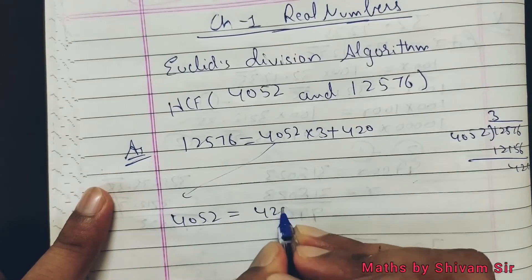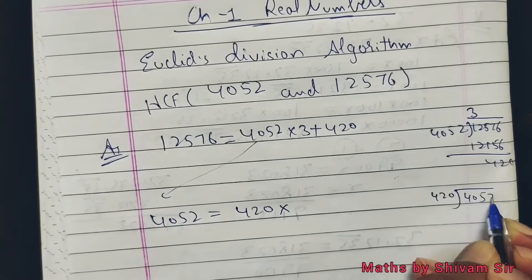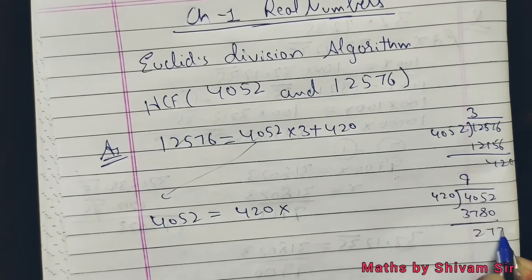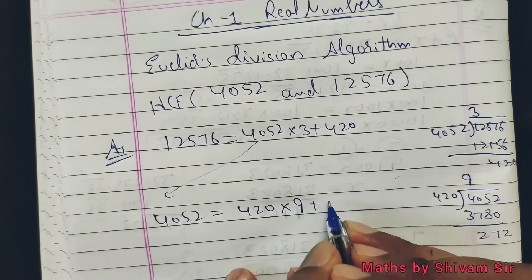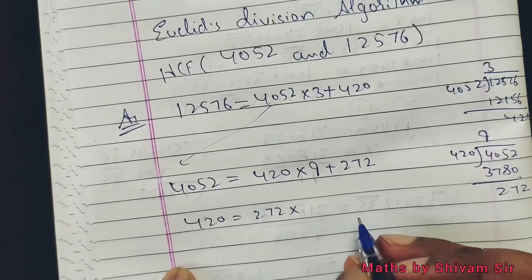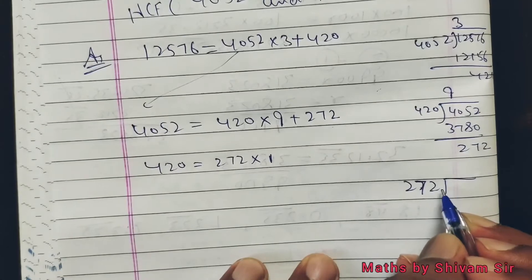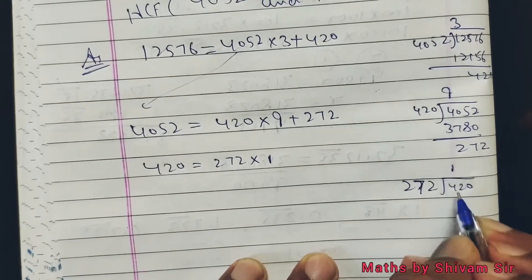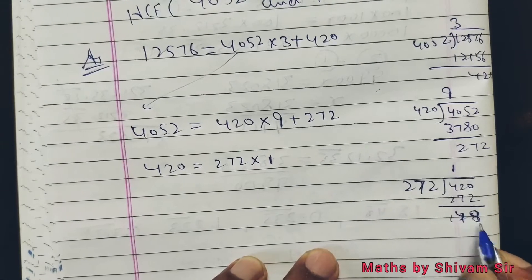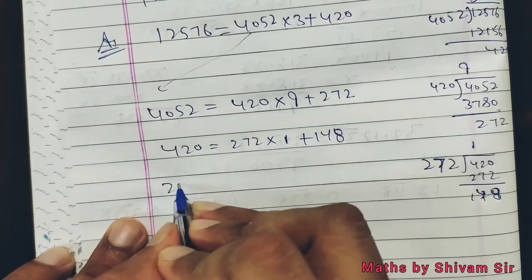Ab is wale number ko likhenge: 4052 is equal to 420 ko kisse multiply karein — wapas divide karke dekh lo rough mein. 4052 divide by 420: jab hum isko 9 times karte hain to aata hai 3780, minus karte hain 272 bachta hai. To multiply by 9 plus 272. Ab wapas 420 ko likhenge, 272 multiply by 1 plus — 420 divide by 272 times 1, minus karte hain 148 bachta hai.